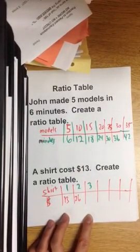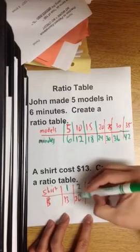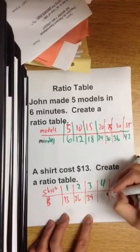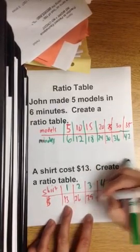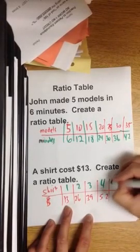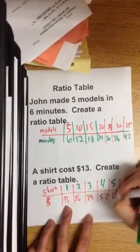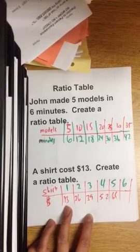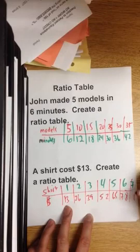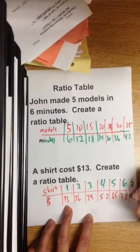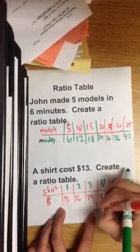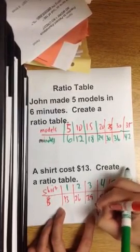Three shirts cost $39. Four shirts - let's see, 13 plus 39 - is $52. Five shirts will cost $65, six shirts $78, seven shirts $91.